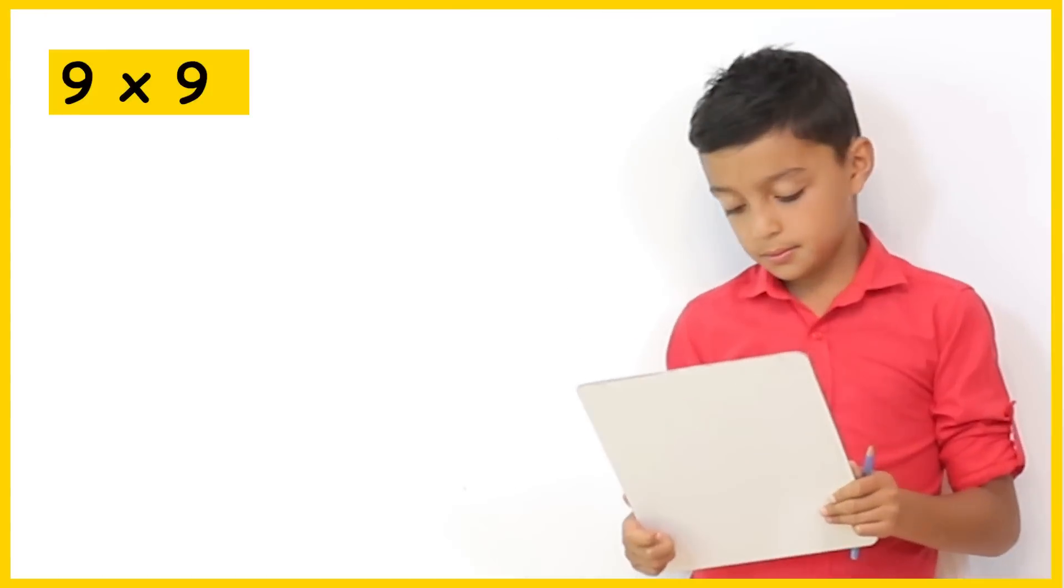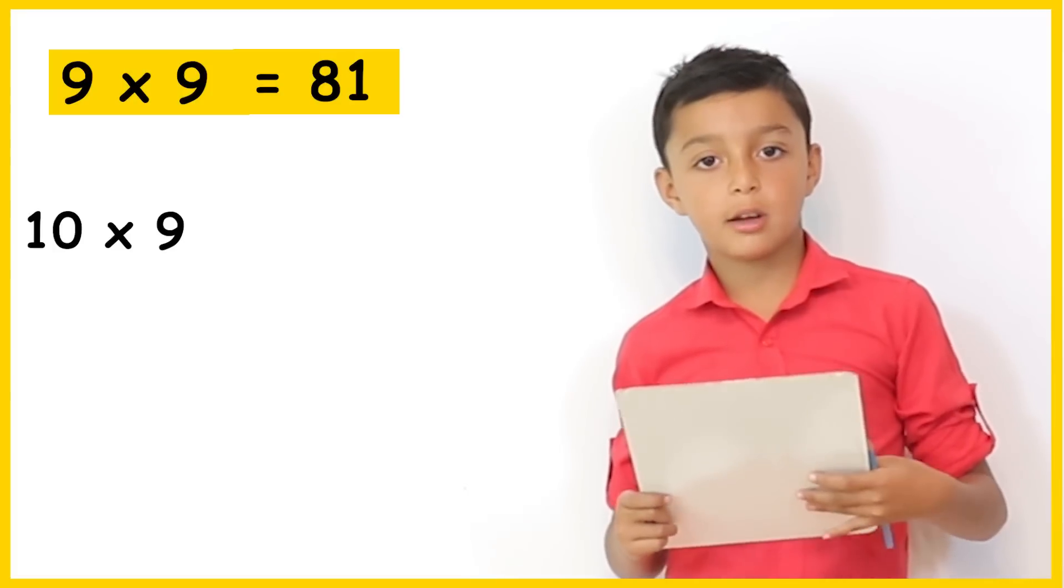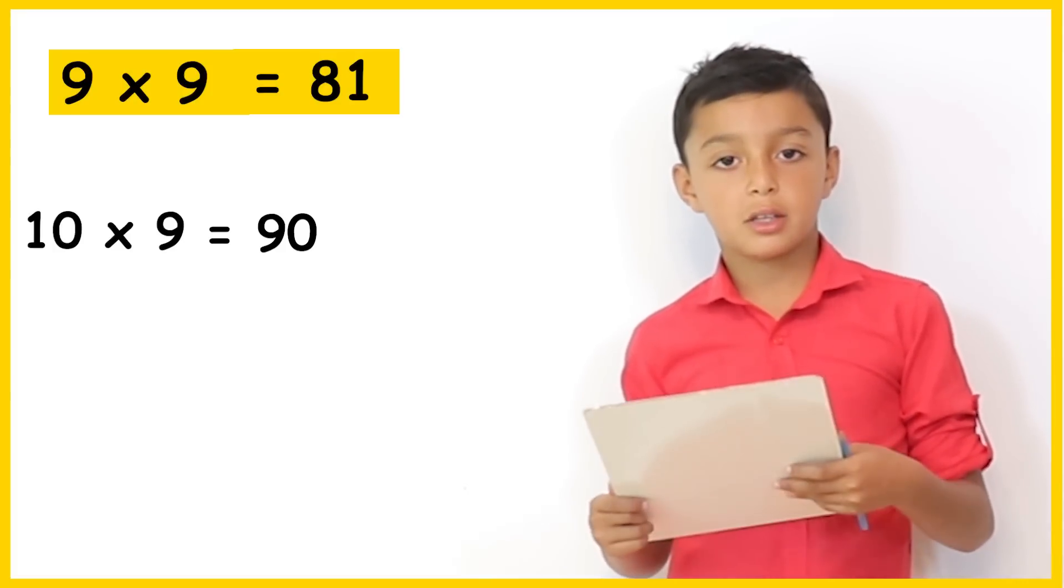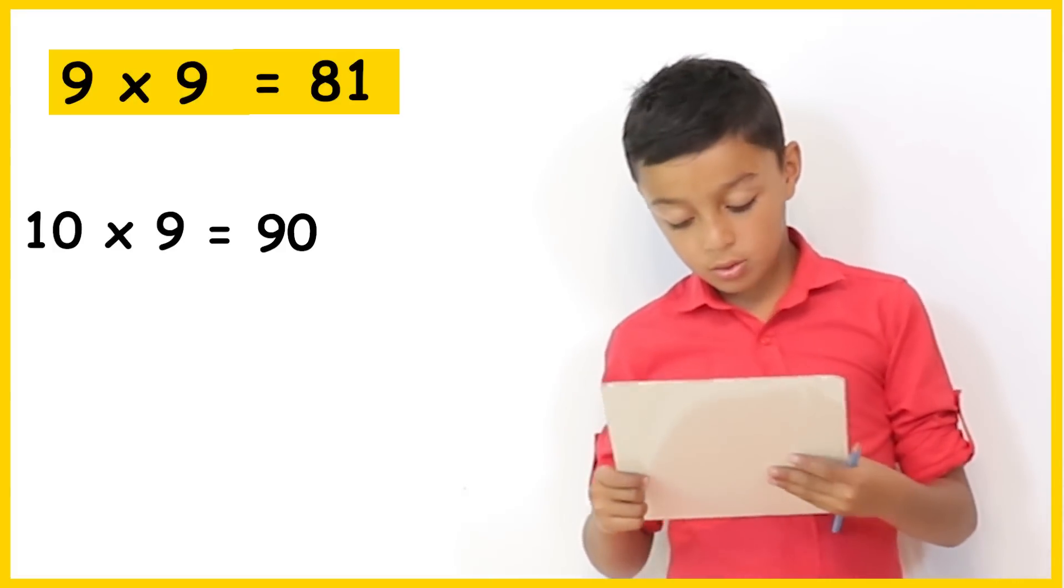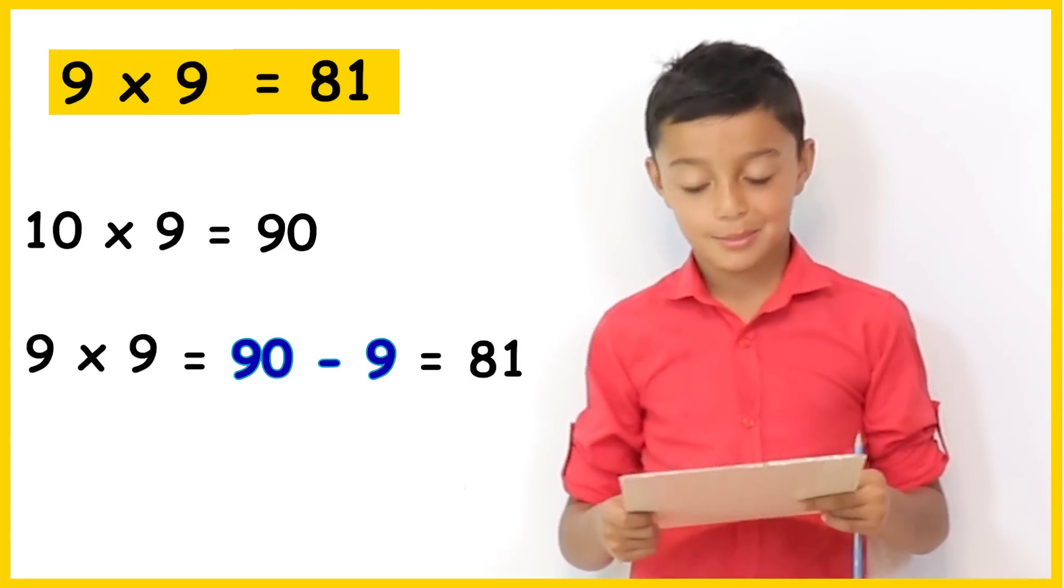What about 9 times 9? 9 times 9 is 81. We can do 10 times 9 which is 90 and then we take away 9 so it equals 81. Excellent Niall.